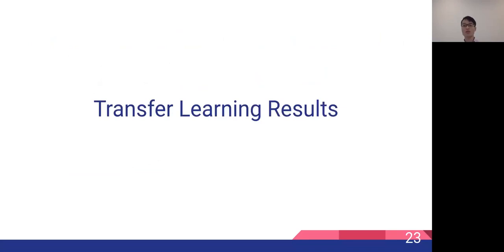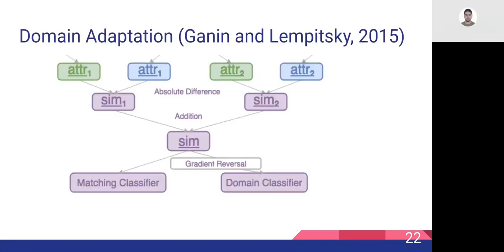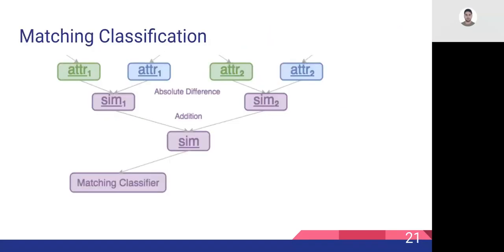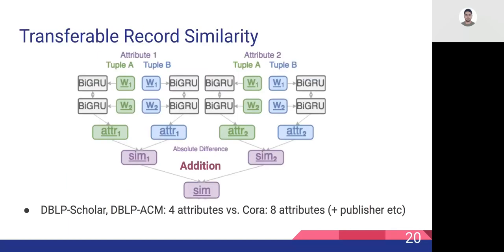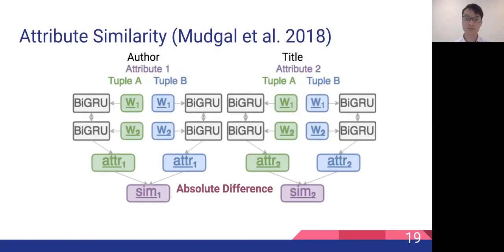Question: In the previous slide, you assumed that the attributes in the two databases have already been matched? Yes, that's right. So in every scenario you have to do some schema matching? You're right. But the target scenario could have different schema as well? Yes. Makes sense, thank you.